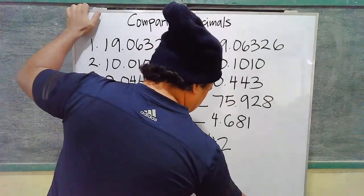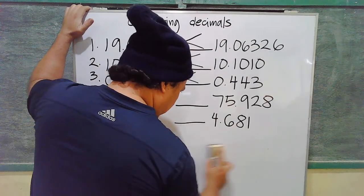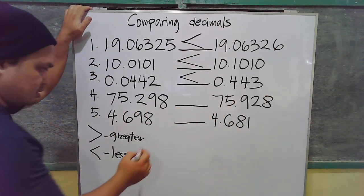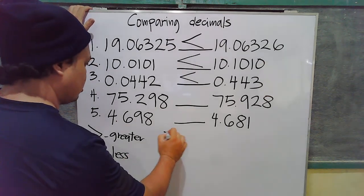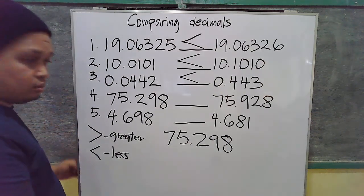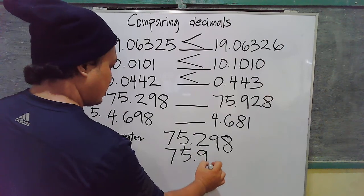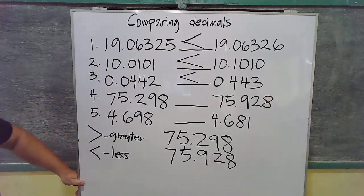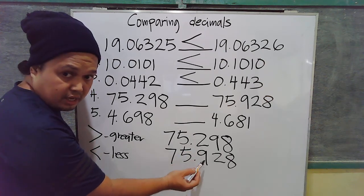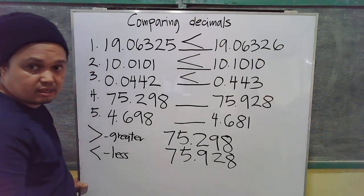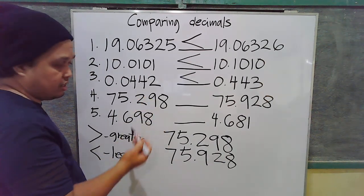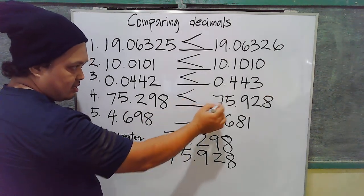Number four: compare 75.298 to 75.928. To answer it easily, let's align them. Now let's compare — 7 and 7 the same; 5 and 5 the same; decimal point the same. Now 2 here and 9: 9 is greater, 2 is less. So 75.928 is greater than 75.298, or to answer this: 75.298 is less than 75.928.